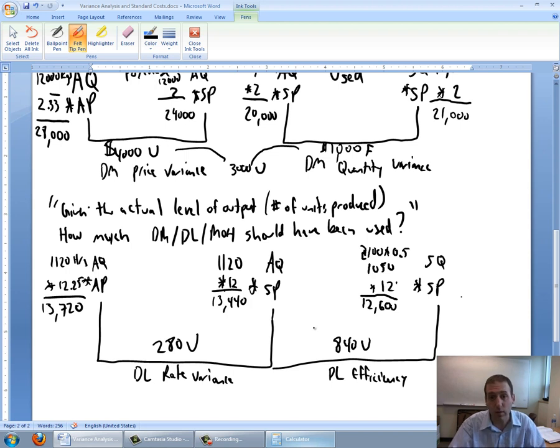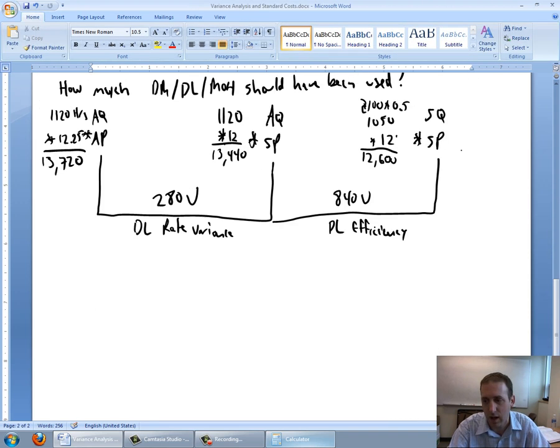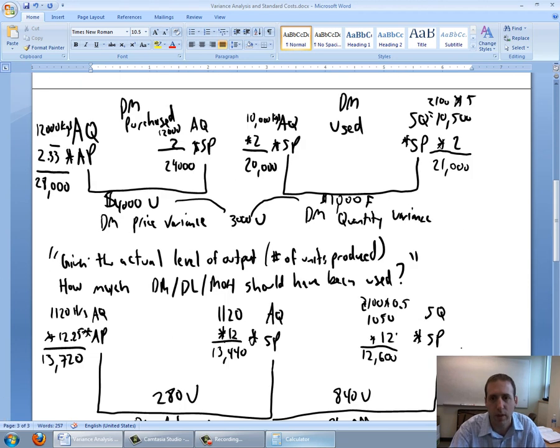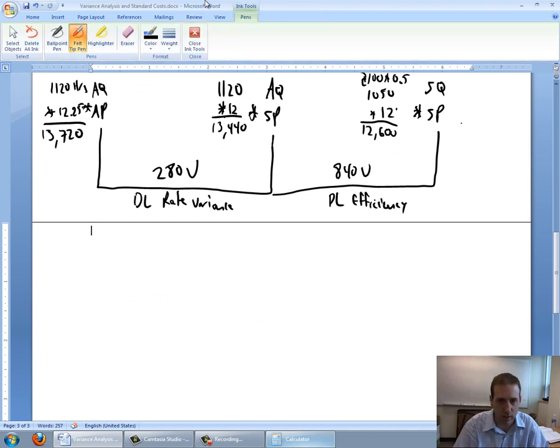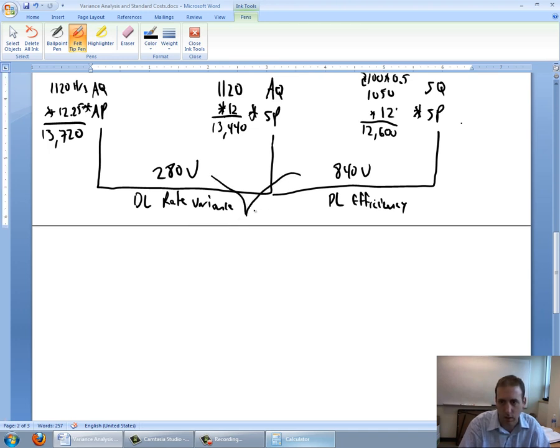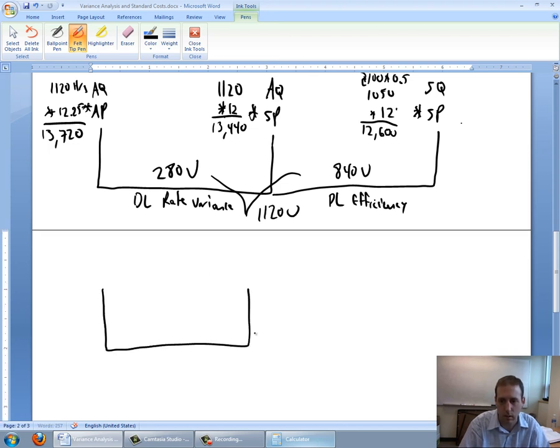So those are my labor variances. We're going to do one more page for overhead variances. So let me see if I can get us into another page here. There we are. So for overhead variances, much the same as labor variances, we set it up in the same way. So I'm going to just set up my overhead variance. Oh, by the way, we could do a total variance here of 11,20 unfavorable. That's my overall labor variance. Let's do our overhead variances now. Again, AQAP, AQSP, SQSP.